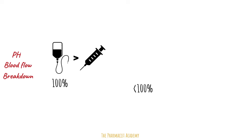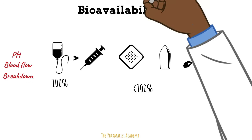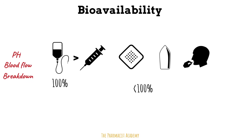With any other formulation, less than 100% of the drug will reach the bloodstream. This includes injectables given intramuscularly or subcutaneously, transdermals, suppositories, and oral drugs. This whole concept is known as bioavailability — the amount of drug absorbed that reaches the bloodstream. As you move to the right in these formulations, the bioavailability reduces.